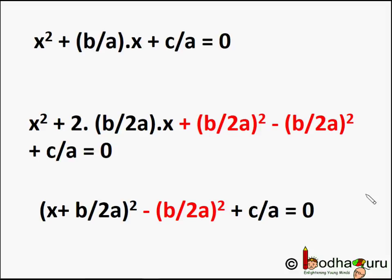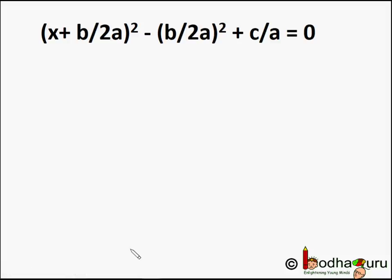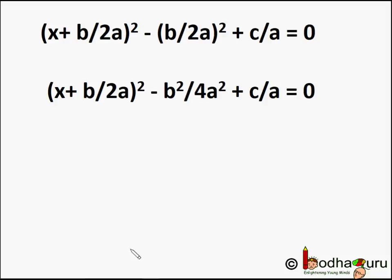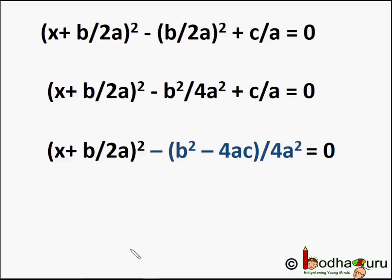So c/a remains the same, and x² + (b/a)·x becomes (x + b/2a)² minus (b/2a)² plus c/a = 0. For simplification, it becomes (x + b/2a)² plus the last two terms. We can take 4a² as the LCM, so we get minus b² minus 4ac over 4a².